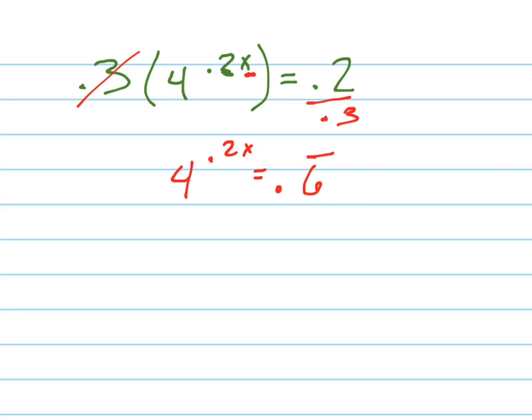Now you can do log. Now I can take the log. How about log base 4? Let's take log base 4 of both sides. So I would get 0.2x, because that gets rid of that entirely.